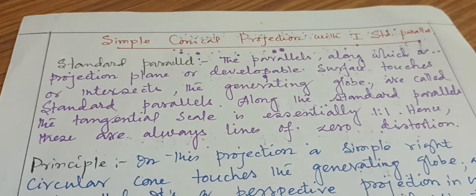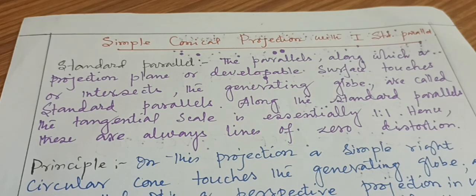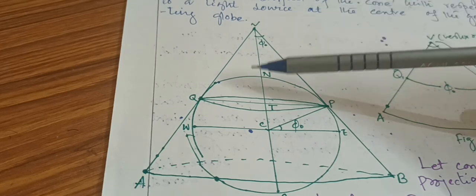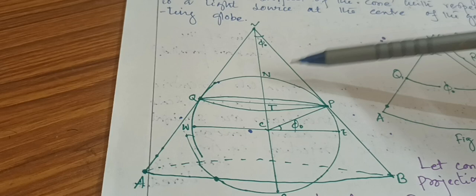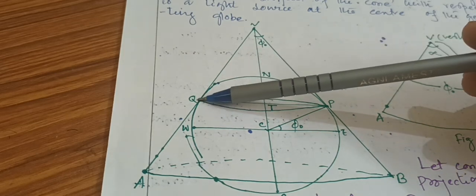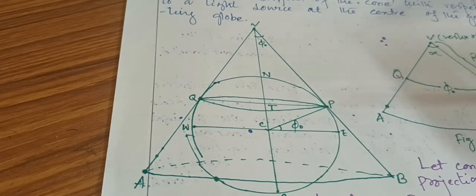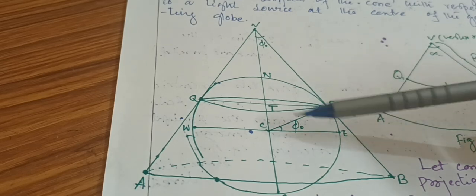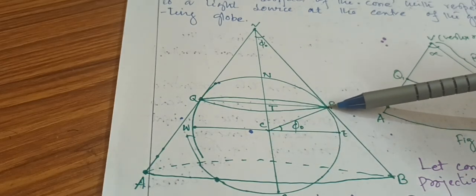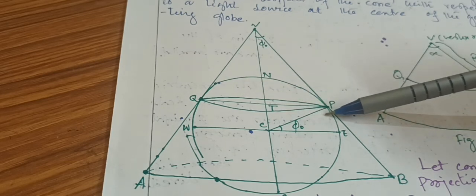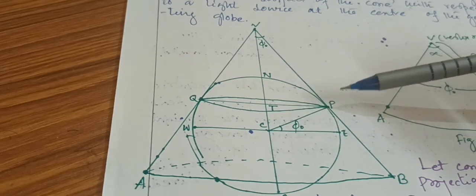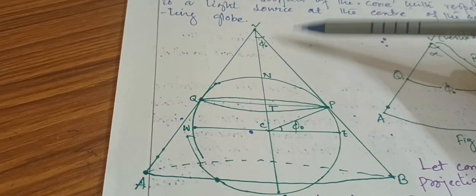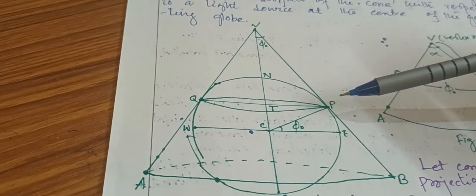We'll quickly look at the diagram so we can understand why it is known as the standard parallel. In this diagram we can see a cone made of paper placed over a generating globe, and this cone is touching the globe at points Q and P. Where it is touching, the scale is truly maintained. The line connecting these points is known as the standard parallel, and only along this parallel is the tangential scale truly maintained — all other parallels are distorted.